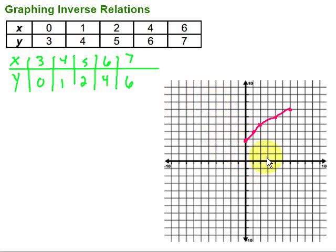So 3, 0, puts me right there. Then 4, 1, over 4, up 1. Then 5, 2, right there. 6, 4, put me up here. And finally, 7, 6, over 7, up 6, puts me right there. Then, I can connect those points, and there's my inverse.